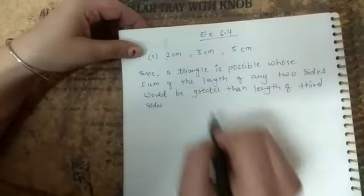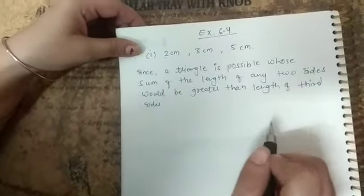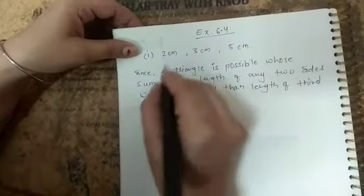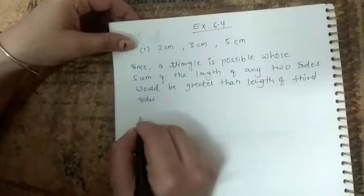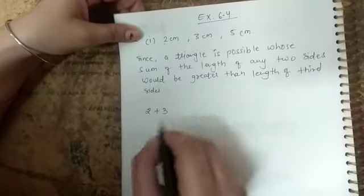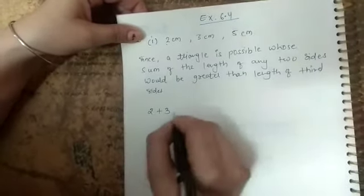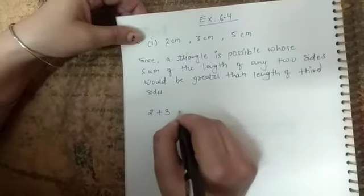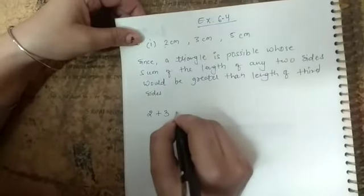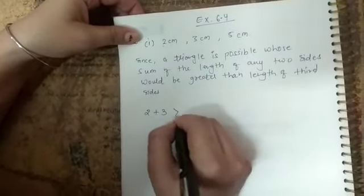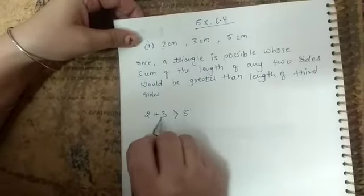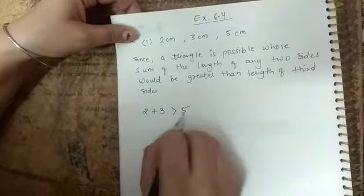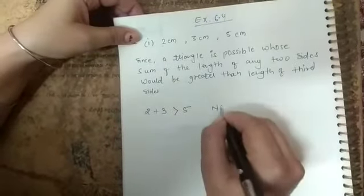So in this question, first we have to check that if we are taking any two sides, suppose 2 plus 3, 2 cm and 3 cm. So after adding 2 plus 3, it's 5 cm. So here 5 not greater than 5 because both are equal. So, no.